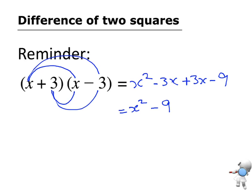So what I want you to notice here is that x squared is a square. 9 is also a square, because 9 is the same as 3 squared. My 3 times my 3.